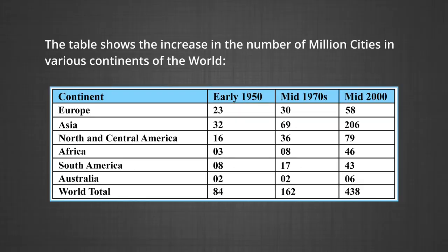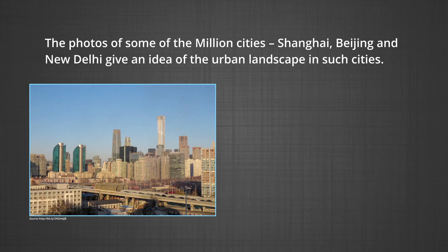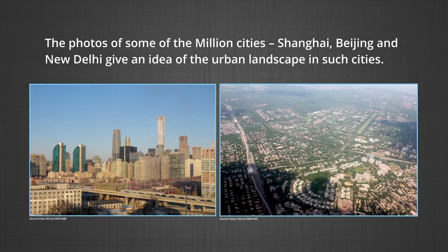Million city: The number of million cities in the world has been increasing as never before. London reached the million mark in 1800, followed by Paris in 1850, New York in 1860, and by 1950 there were around 80 such cities. The rate of increase has been threefold in the last three decades — around 160 in 1975 to around 438 in 2005. The table shows the increase in the number of million cities in various continents. Photos of Shanghai, Beijing, and New Delhi give an idea of the urban landscape in these million cities.